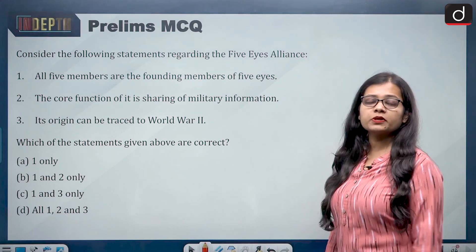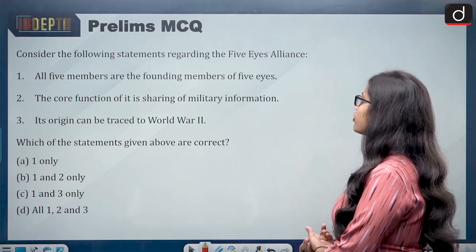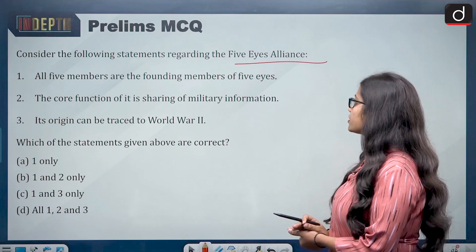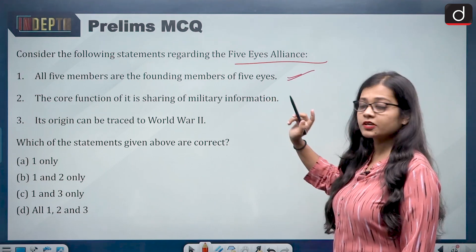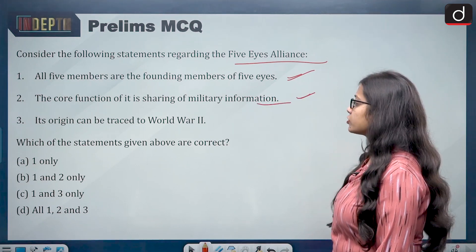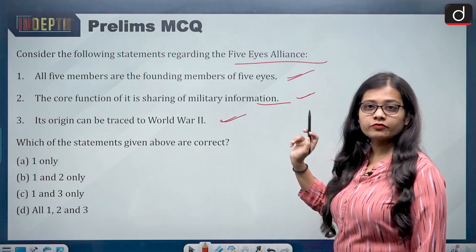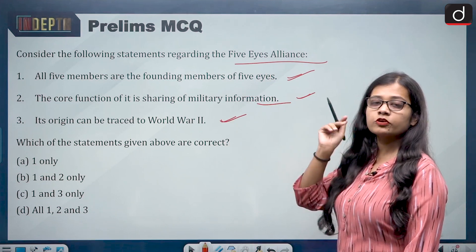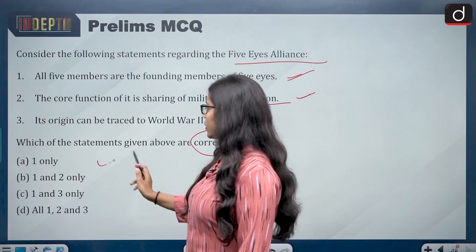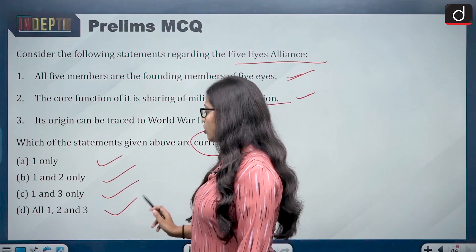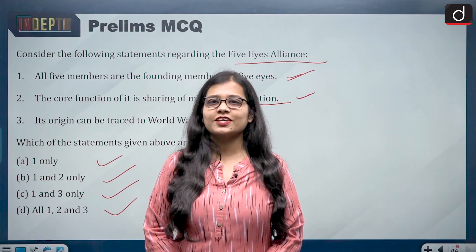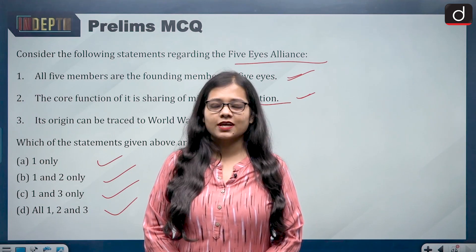Finally, a prelims MCQ — tell me the answer in the comment section. Consider the following statements regarding the Five Eyes Alliance: (1) All five members are the founding members of Five Eyes; (2) The core function is sharing of military information; (3) Its origin can be traced to World War II. Which are correct — one only, one and two only, one and three only, or all one, two, and three? Give the answer in the comments. That's all for today — thank you for watching. Till we meet next time, keep reading and keep writing.